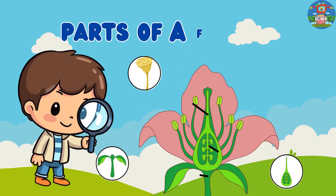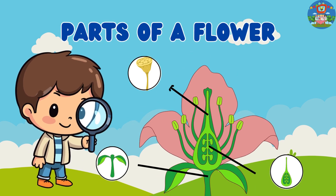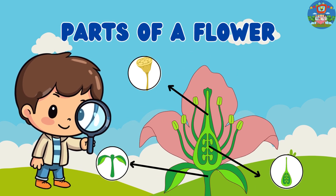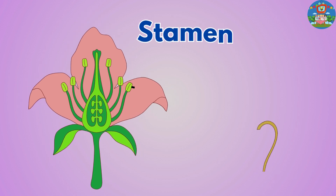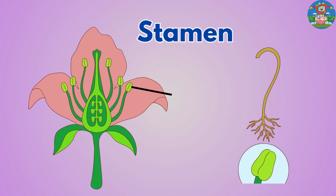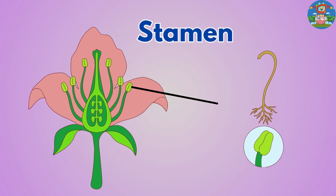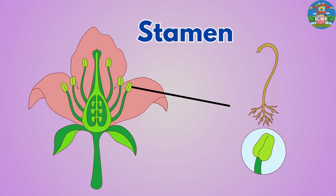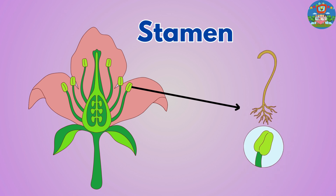Hey kids, today let's explore and learn about parts of a flower. Stamen. The stamen is the male reproductive part of a flower, producing pollen that fertilizes the ovary.